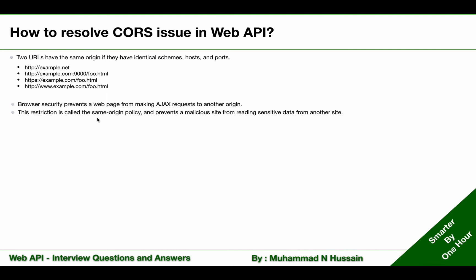Now, in a Web API context, sometimes we might want to let other sites call our Web API. So how do we resolve this issue? The answer is by using CORS.